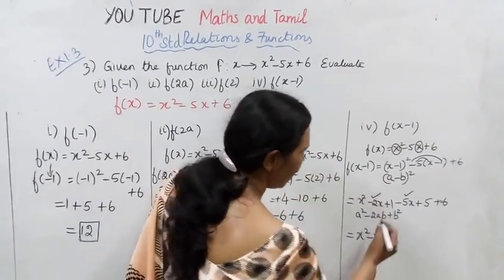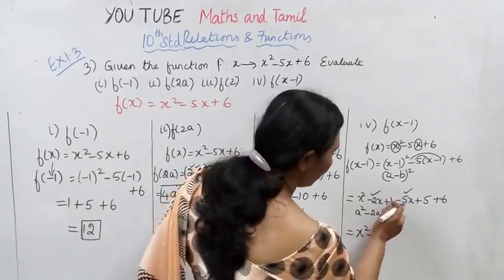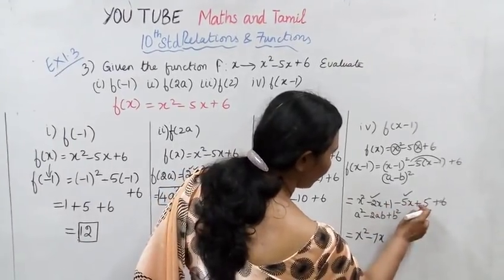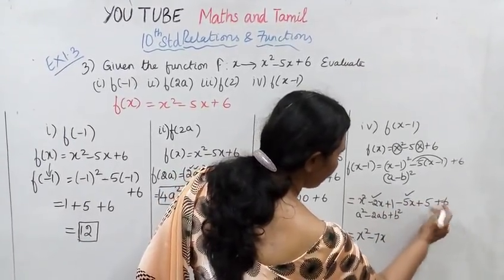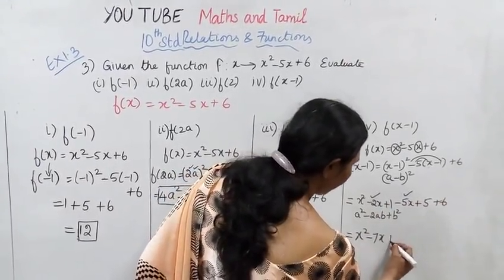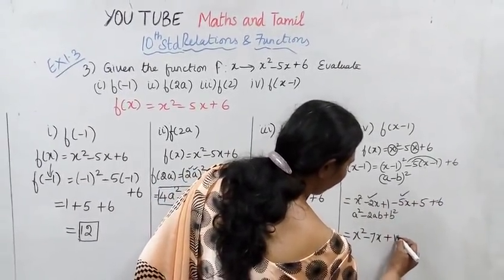Expanding: x square minus 2x plus 1, minus 5x plus 5, plus 6. Collecting like terms: minus 2x minus 5x gives minus 7x. Constants: 1 plus 5 plus 6 equals 12.